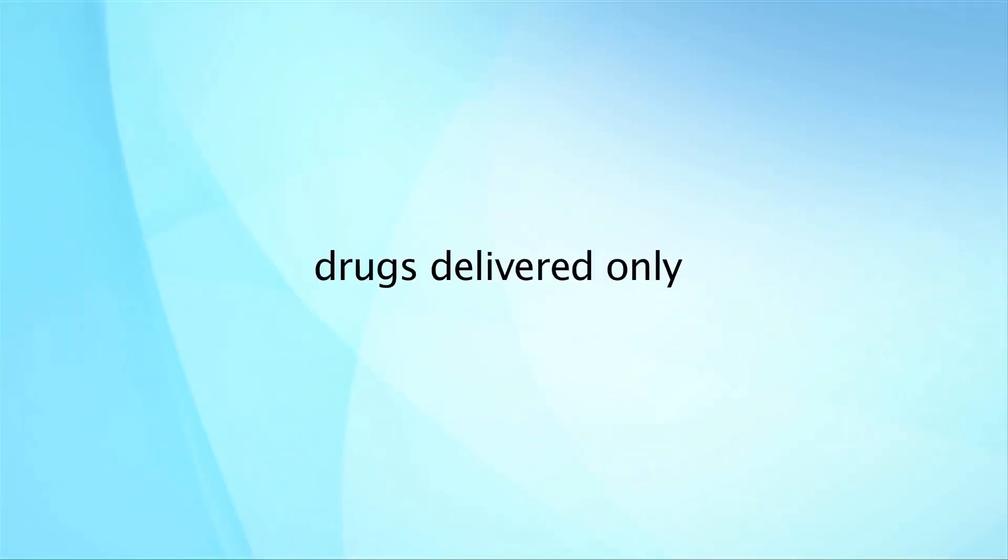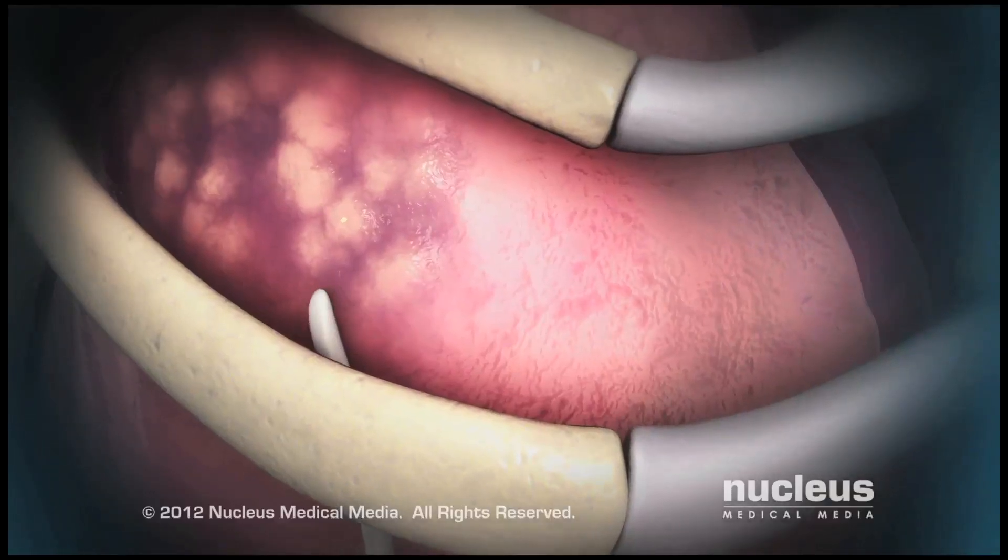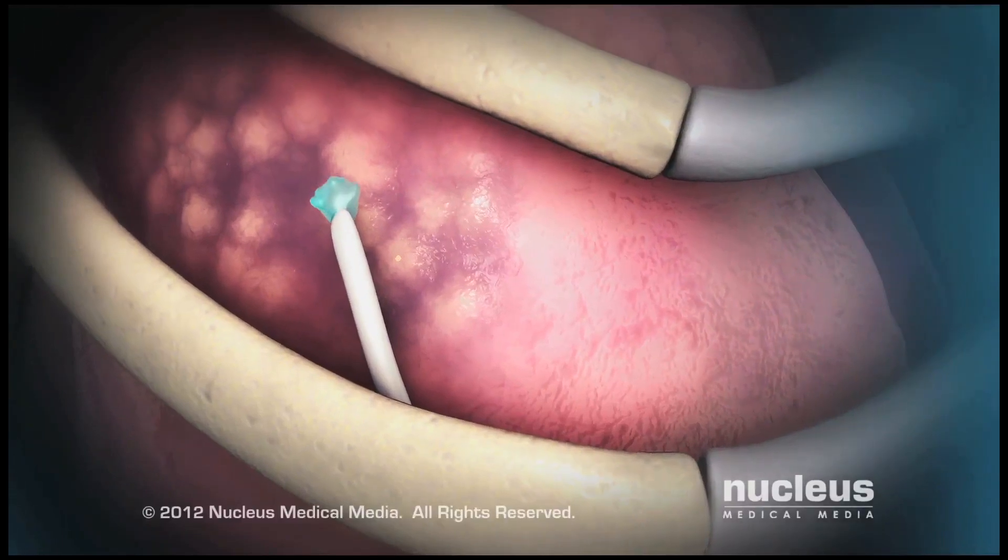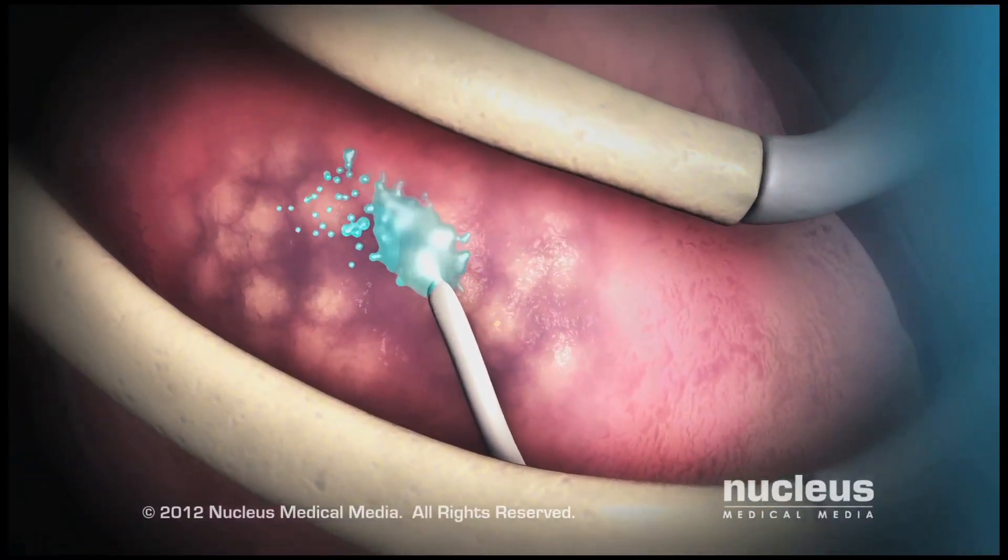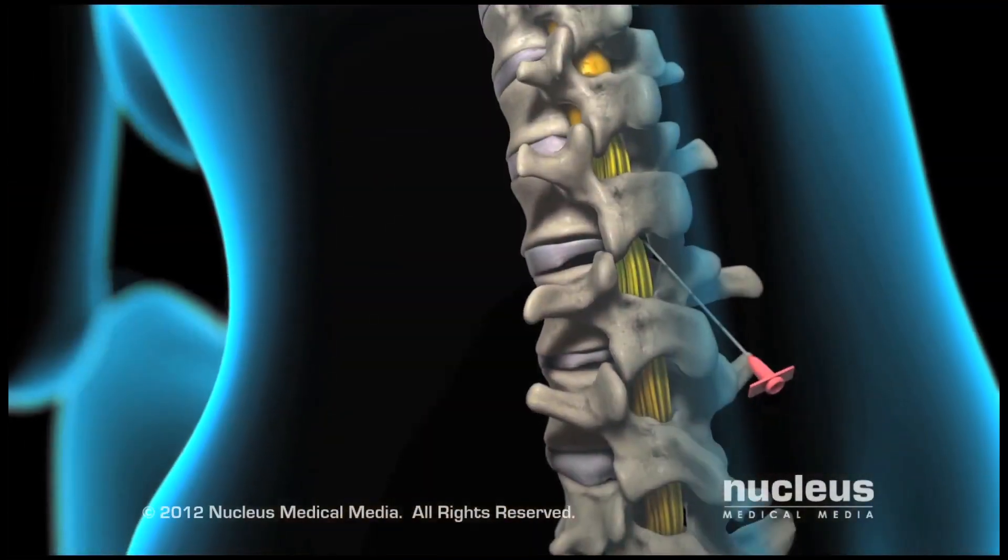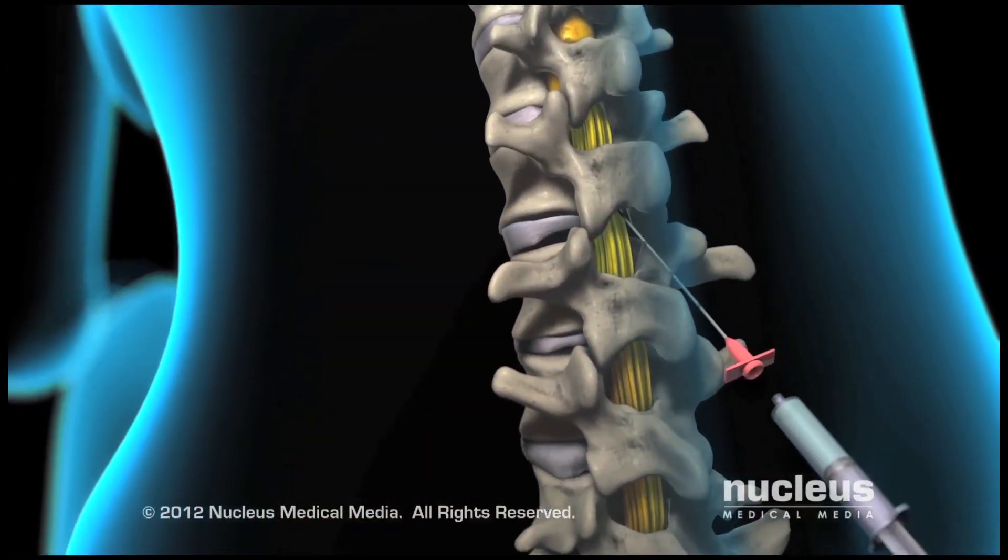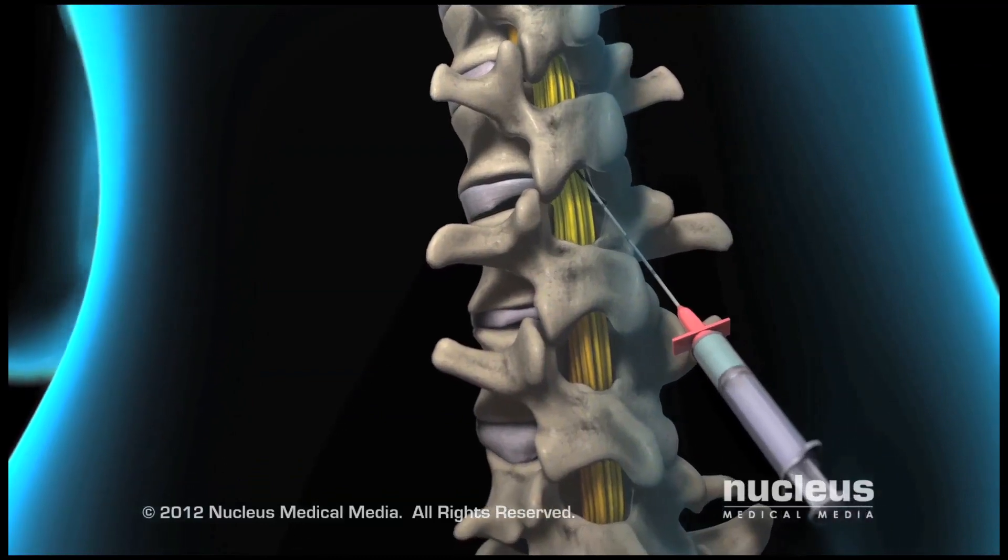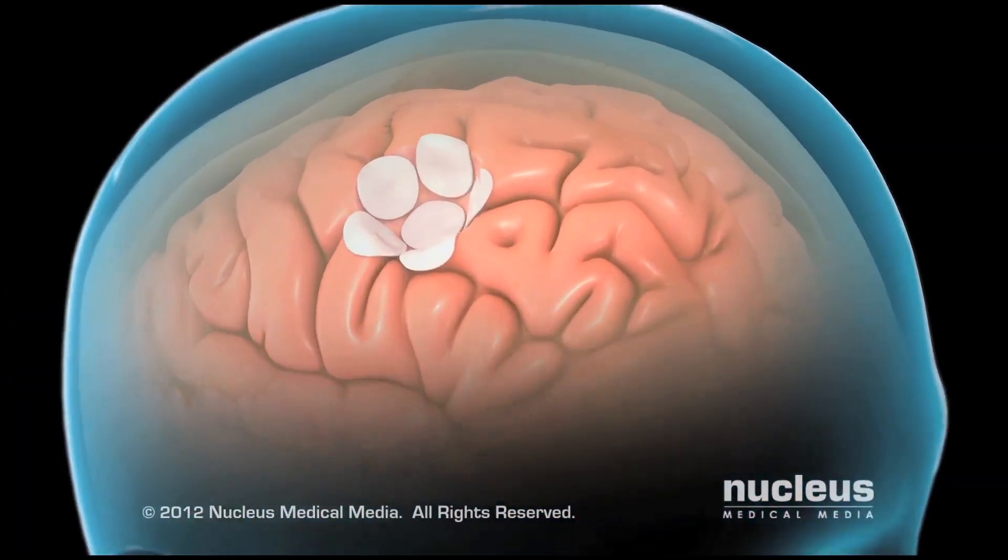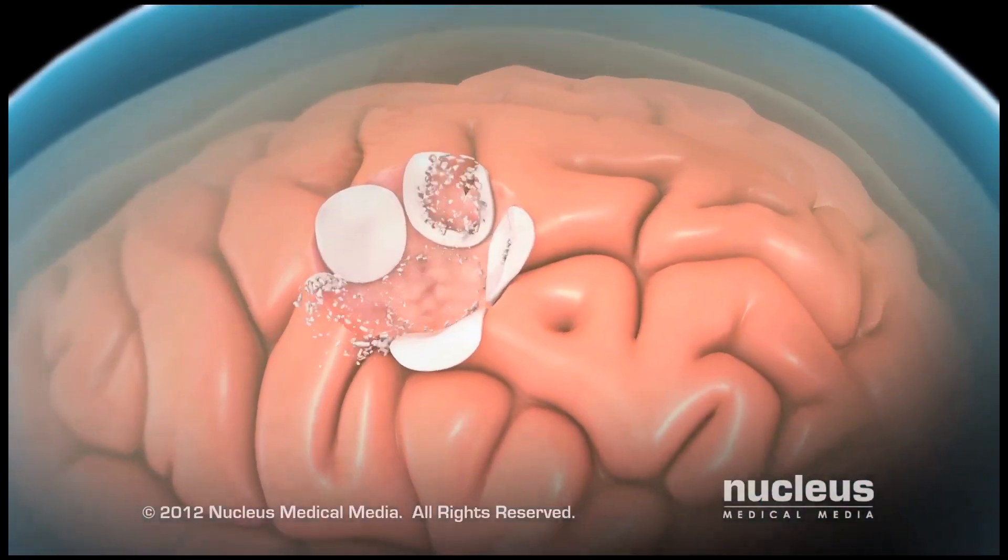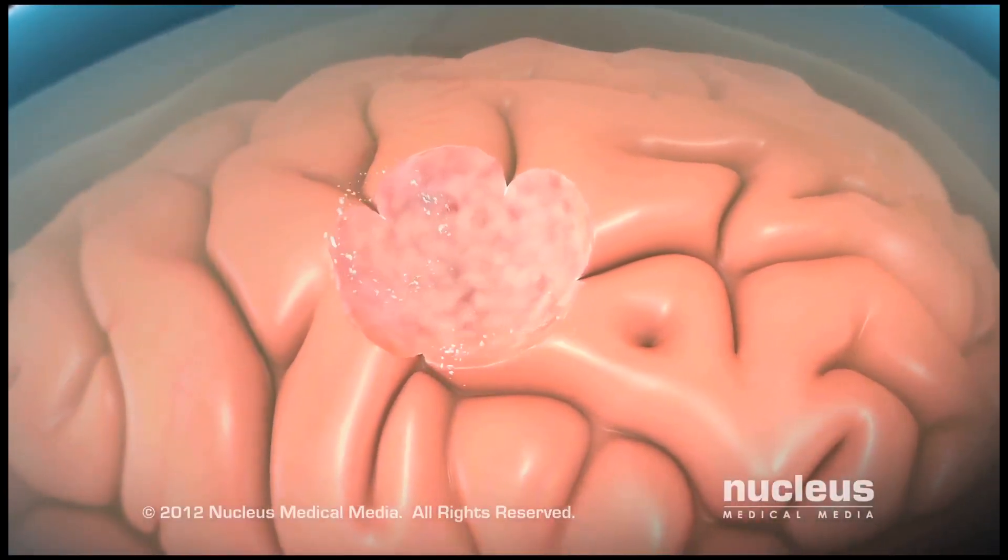Alternatively, you may receive drugs delivered only to the area of the tumor. One local method delivers drugs to your bladder or chest through narrow tubes called catheters. Another local method injects drugs into the cerebrospinal fluid surrounding your brain and spinal cord. A third local method places slowly dissolving wafers into an area where a tumor was removed.